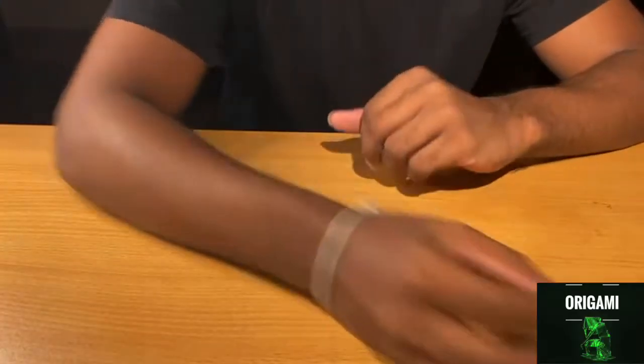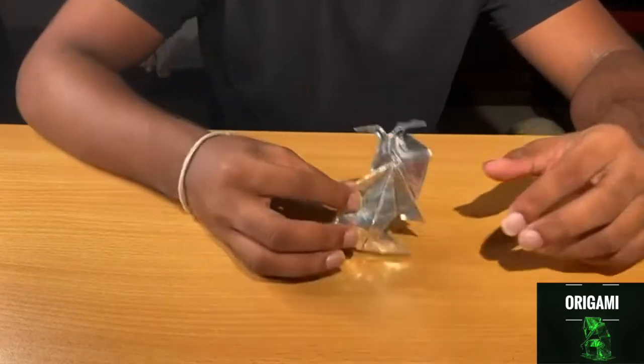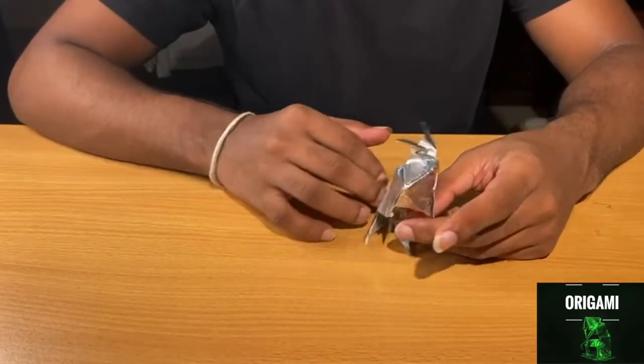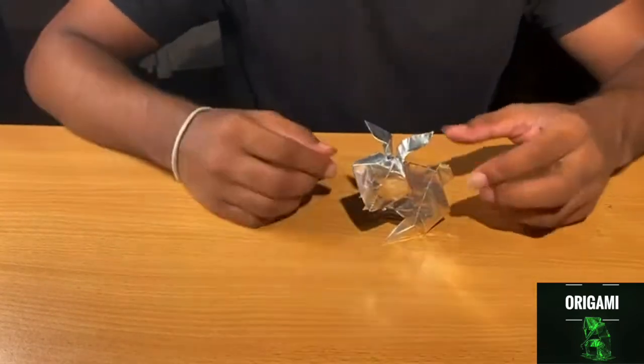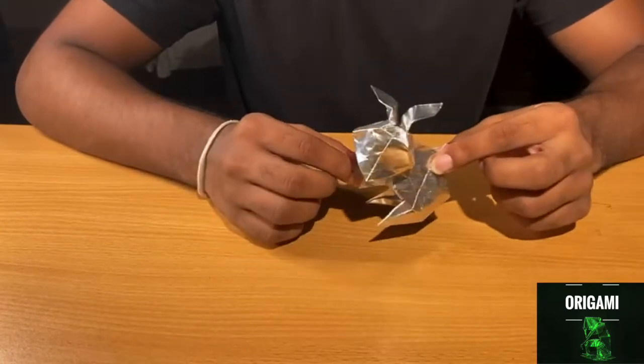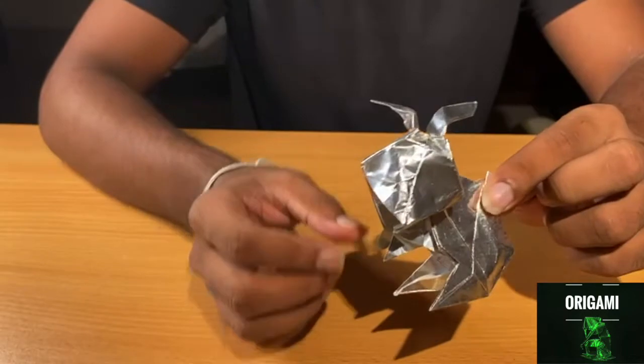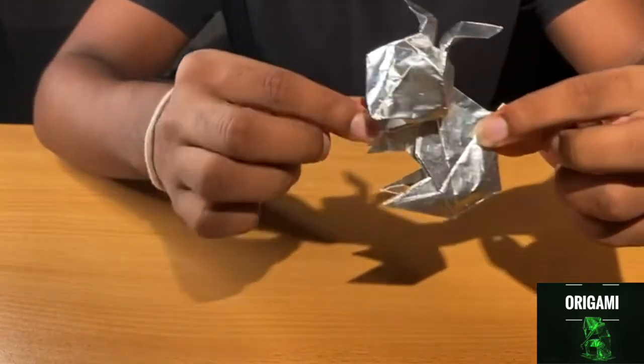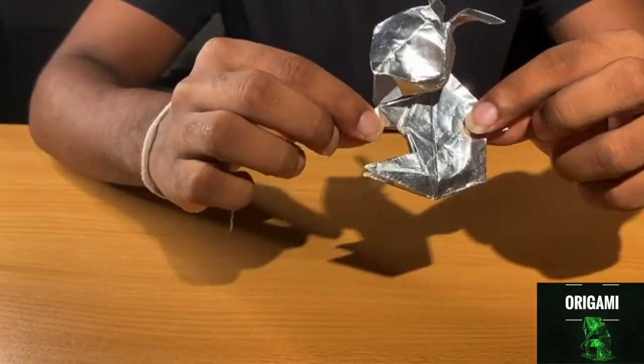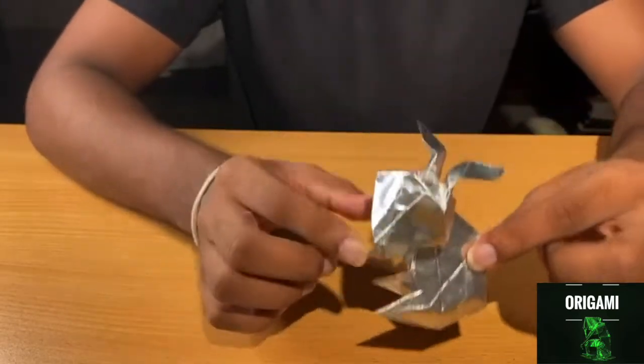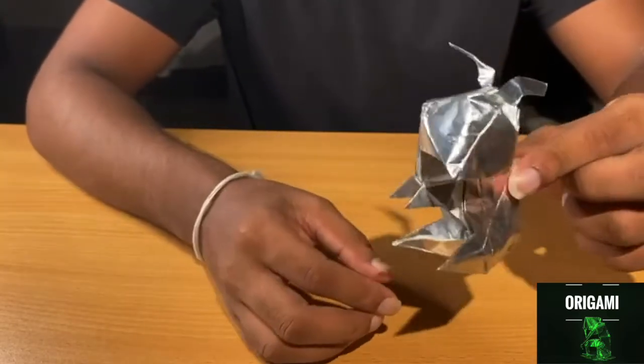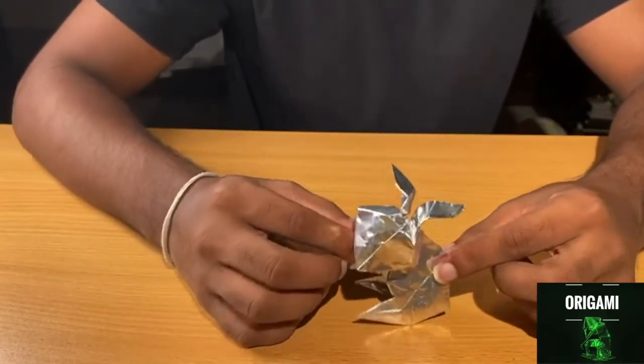And the last intermediate model we have is the origami bunny, a rabbit I guess. This one's high intermediate. You can see the ear shape, it has two hind legs and the front arms. Now let me get you a better view of this one.